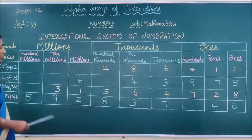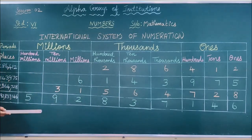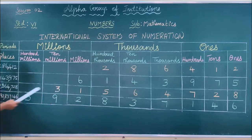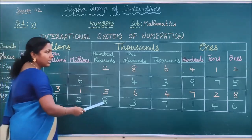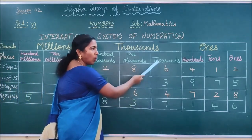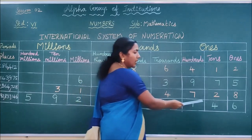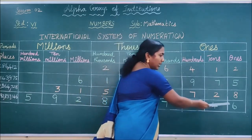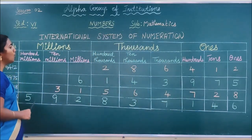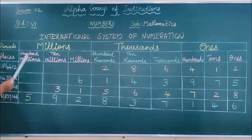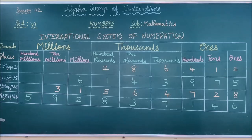Similarly, 592 million, 837 thousand, and 146. In this way you have to read numbers by using the international system of numeration.